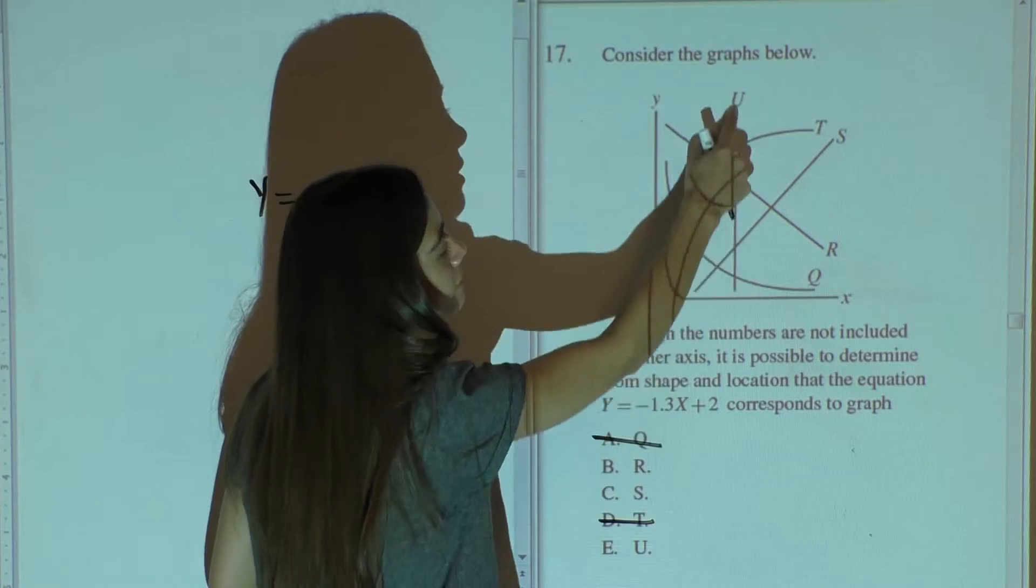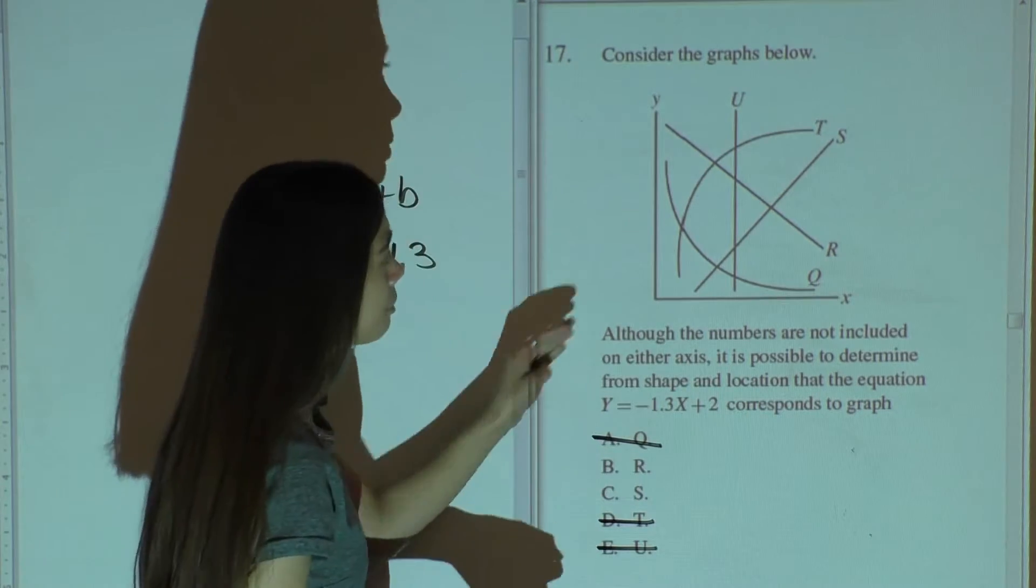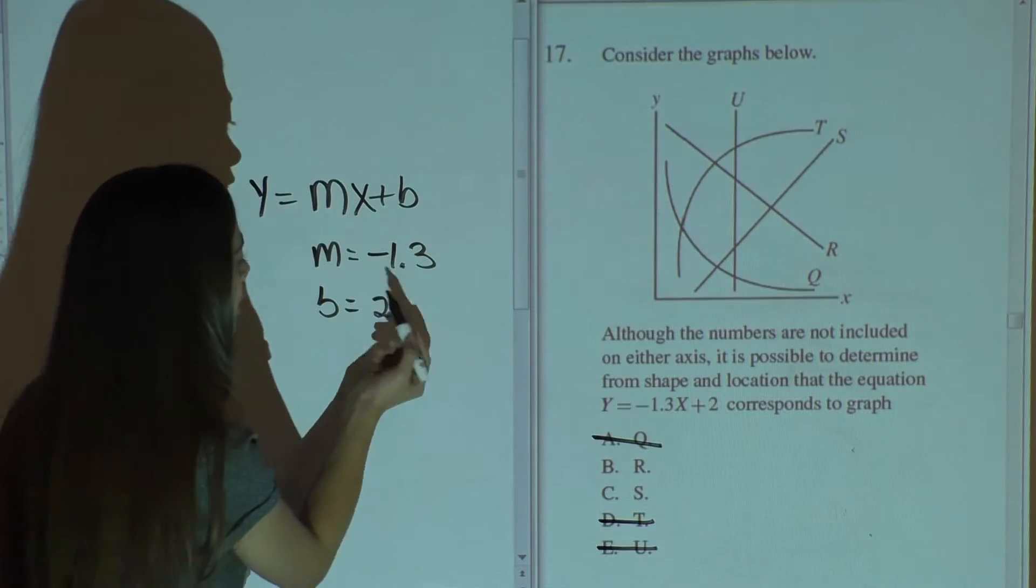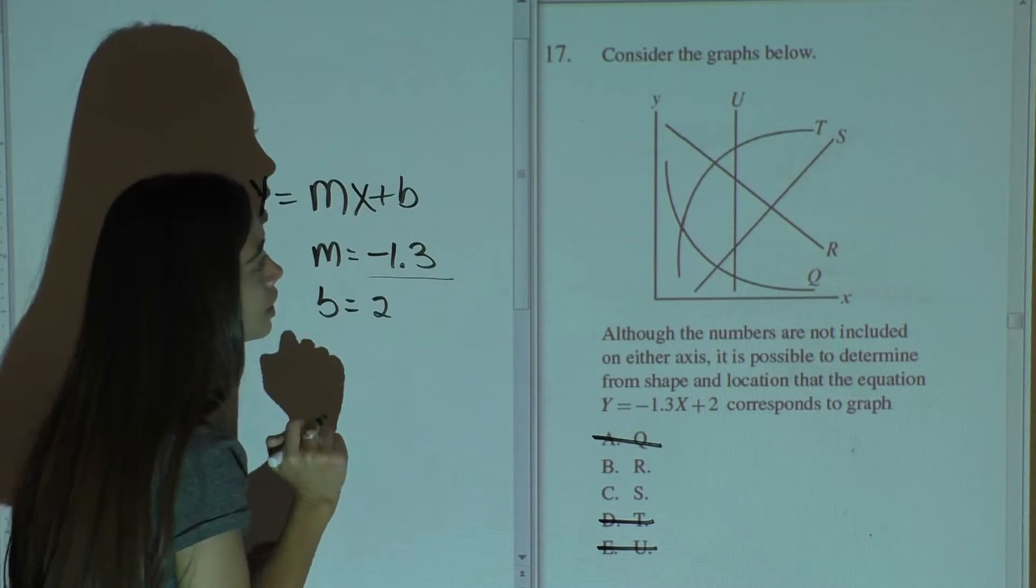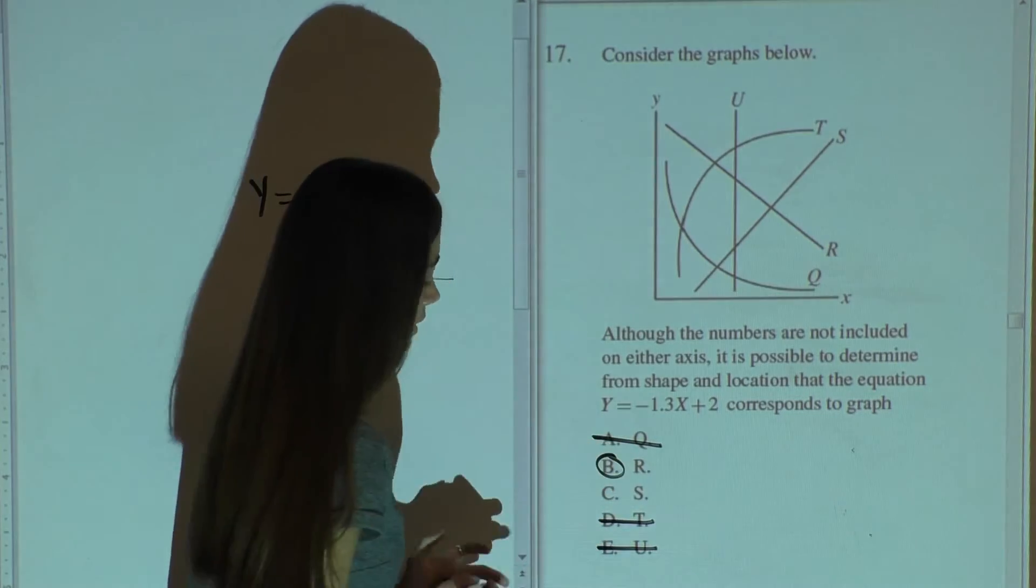Now, u does not have a slope because it's a vertical line, so you can eliminate u. So now between r and s, you look at your slope. It's a negative slope, and the one that has a negative slope is r, which is why your answer is b.